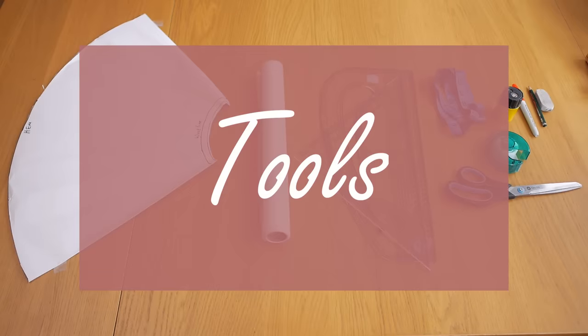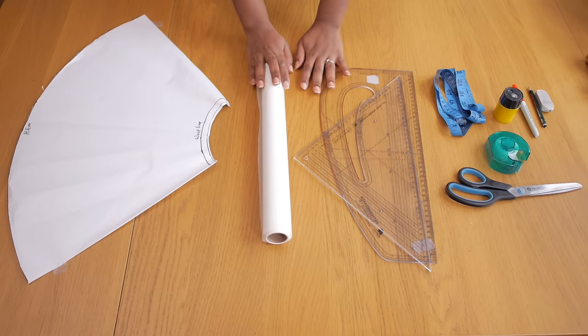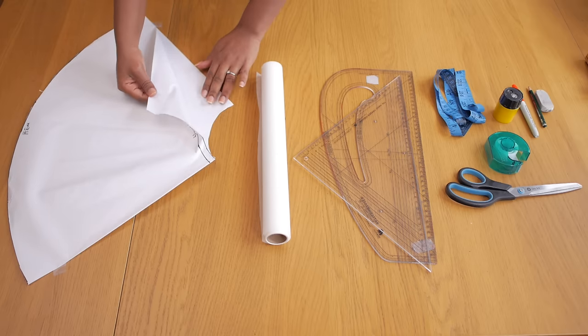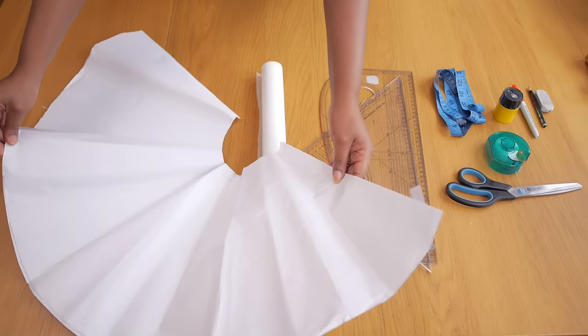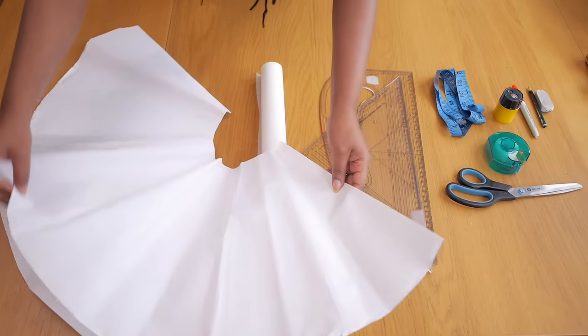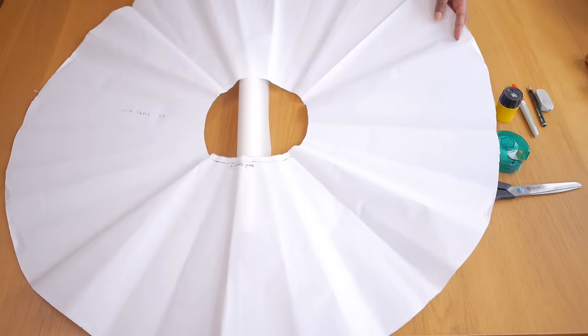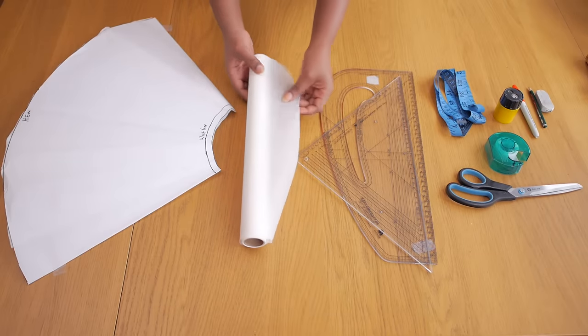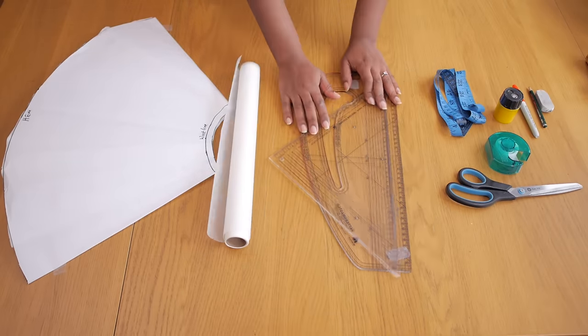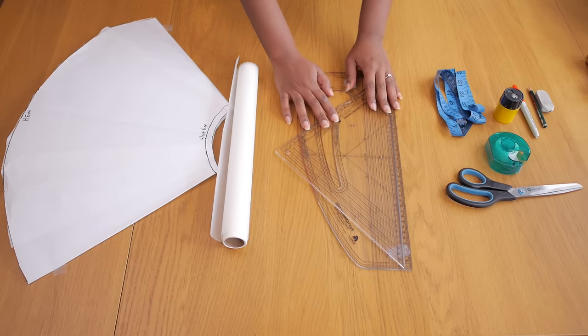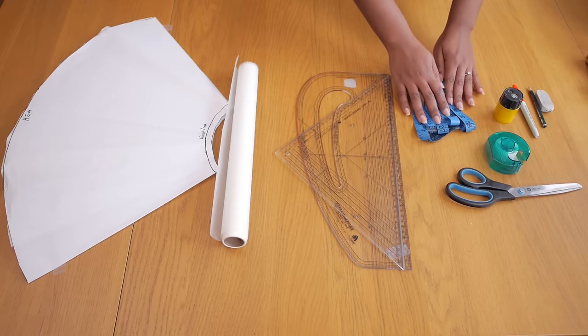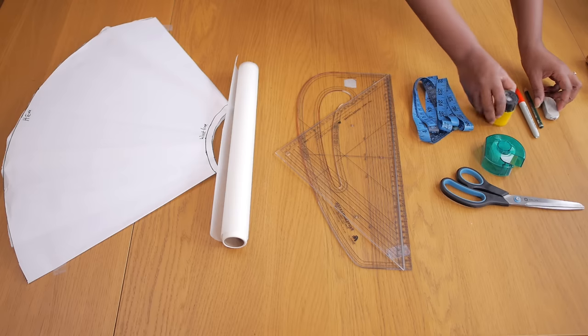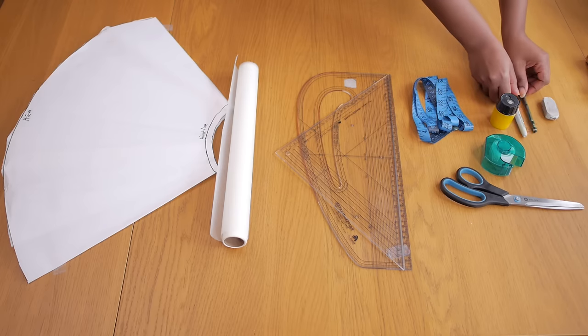Alright, let's get started. These are the tools I'll be using. I've already done a pattern tutorial on how to create a full circle skirt—I'm going to link that in the description box down below. I got some extra pattern paper, my rulers (straight and curved), tape measure, scissors, tape, sellotape, sharpener, pencil, pen, eraser—all that good stuff you need to make a good pattern.